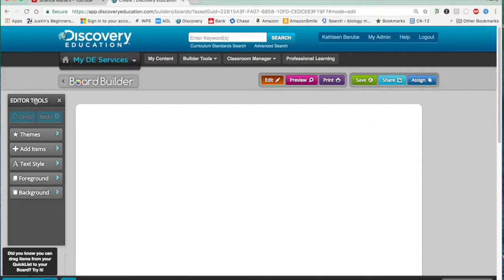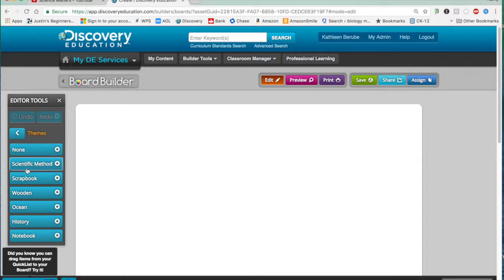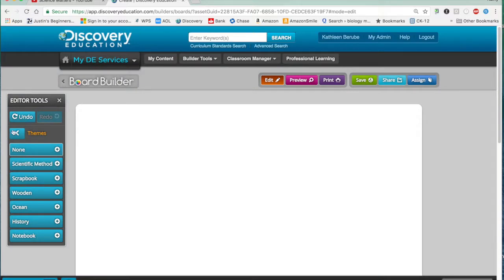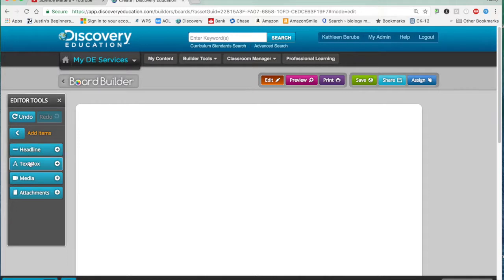Over here are your editing tools. You can again select a theme if you wanted to work with say scrapbook instead of just a blank. We're going to stay in blank. You can add items. Here's where we can add the headline box, a text box, media which would be either pictures or video directly from Discovery Ed or from your computer and also any attachments. An attachment is what I used when I built the quiz as a word document. I uploaded it using this attachment feature. The other thing if you take a look up here you have a button for edit, preview, print, save, share, and assign. So just again some other buttons that we're going to look at the function of those as we build.